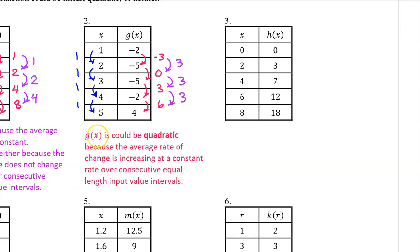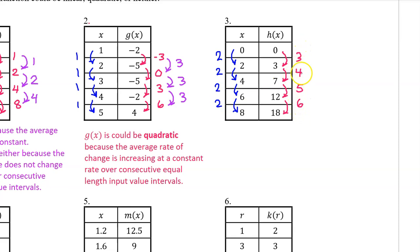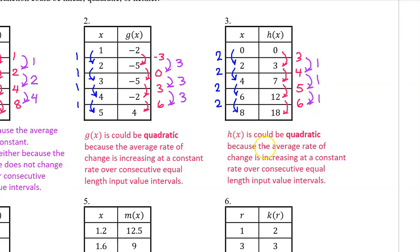Remember: if you say that g of x could be quadratic, you must mention consecutive equal length input value intervals. For number 3, these are the changes in the output values, and these are the changes in the input values. Because we have consecutive equal length input value intervals, the average rate of change is not constant, so h of x is not linear. We can also see that the rate of change is increasing at a constant rate, so h of x is quadratic. H of x could be quadratic because the average rate of change is increasing at a constant rate over consecutive equal length input value intervals.